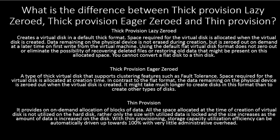Thick provision eager zeroed is a type of thick virtual disk that supports clustering features such as fault tolerance. Space required is allocated at creation time, and the data remaining on the physical device is zeroed out when the virtual disk is created. It may take longer to create a disk in this format. Thin provisioning provides on-demand allocation of blocks of data. Not all space allocated at creation time is utilized on the hard drive — only the size of utilized data is used, and the size increases as data increases. With thin provisioning, storage utilization efficiency can be automatically driven up to 100% with very little administrative overhead.